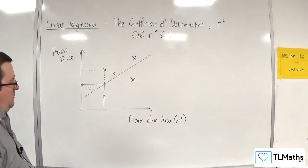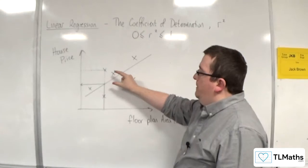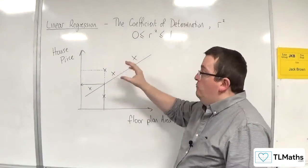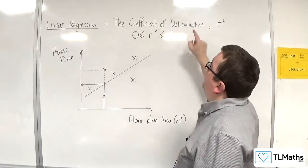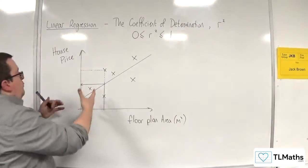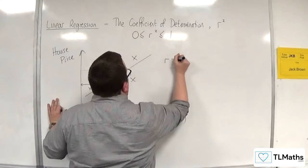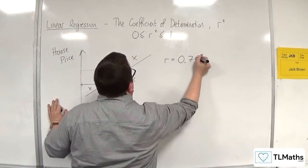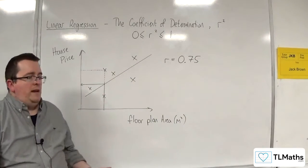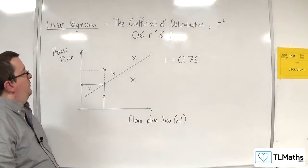This variation in Y is what I'm really thinking about when we look at the coefficient of determination. So let's say that for my scatter graph, I calculate the value of r to be 0.75. It's reasonably strong positive correlation, or moderately strong positive correlation.